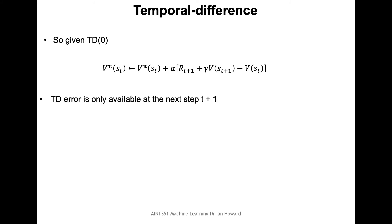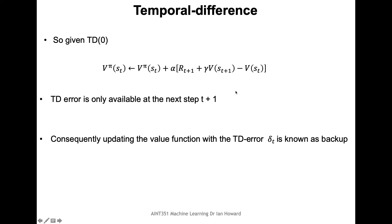The TD(0) formula is: the updated value of state s_t under a policy equals the current value plus a learning rate multiplied by the immediate reward plus the discounted predicted value of the next state s_{t+1}, minus the value of the current state. The immediate reward is what we definitely know from one step, and the discounted value of the next state is our best prediction. This forms an incremental empirical mean update.